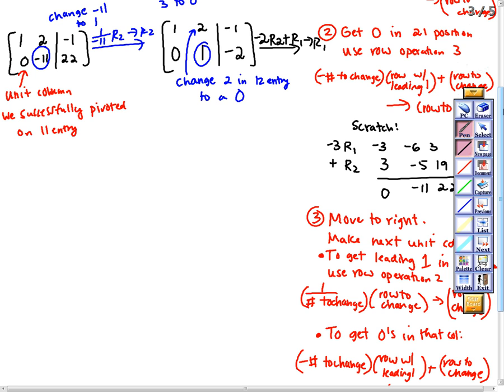So let me do some scratch. Negative 2, row 2. I multiply every entry in here by negative 2. So 0, negative 2, positive 4. I'm going to add that to row 1: 1, 2, negative 1. If I add, I get 1, 0, and 3.